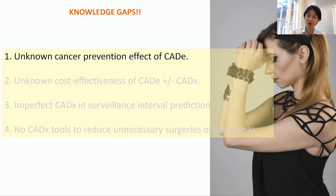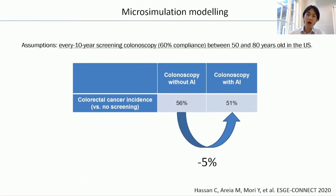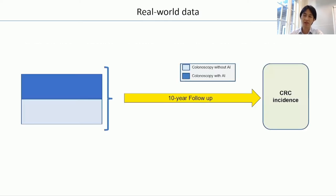The first problem is the unknown cancer prevention effect of CADe. According to previous six RCTs, ADR is expected to increase significantly with use of AI or CADe. However, we don't know whether this increment can contribute to improvement of cancer prevention effects, such as the incidence or mortality of colorectal cancer. We conducted micro-simulation modeling to predict the impact of AI in cancer prevention. A 5% reduction of colorectal cancer incidence can be expected with use of AI according to this modeling. However, there is always instability in micro-simulation, so what we should do at the next stage is a real-world randomized controlled trial — which is exactly what we are working on together with Mikhail.